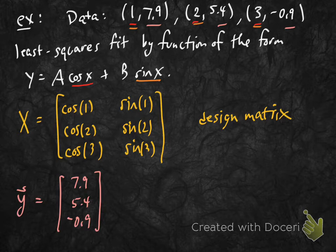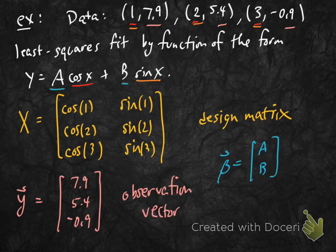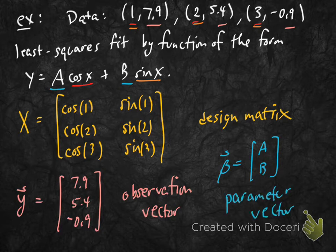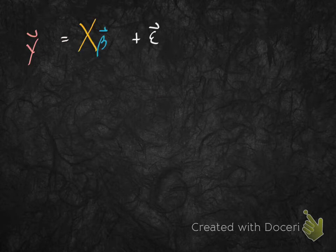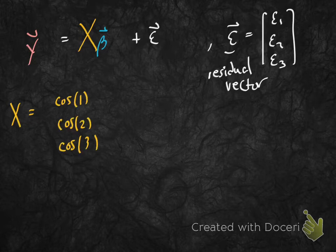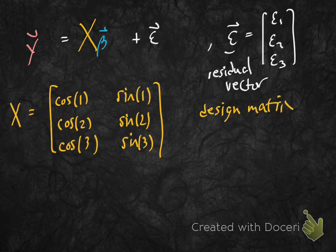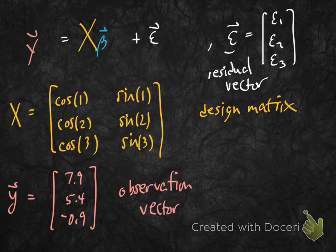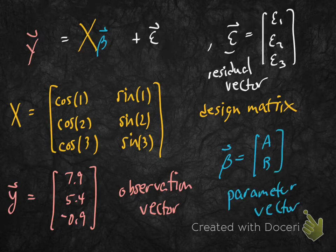The observation vector y is (7.9, 5.4, −0.9) — the y-coordinates of the data points. The parameter vector β is (a, b) — the unknowns. We're minimizing the length of the residual vector ε in y = Xβ + ε, which is the same as finding the least squares solution to Xβ = y, where X is the design matrix, y is the observation vector, and β is the parameter vector.